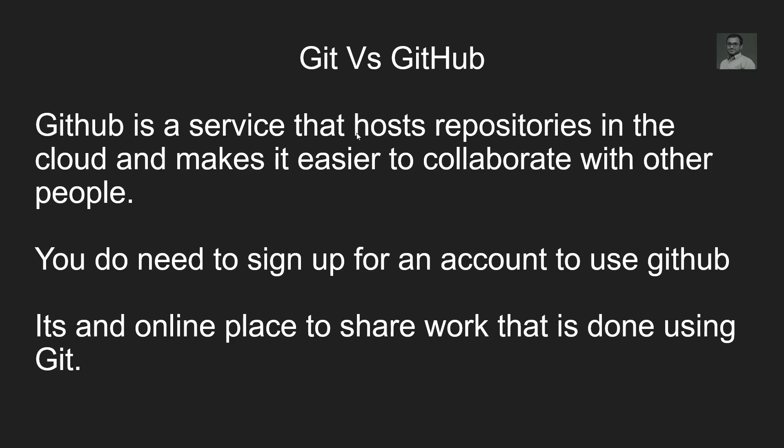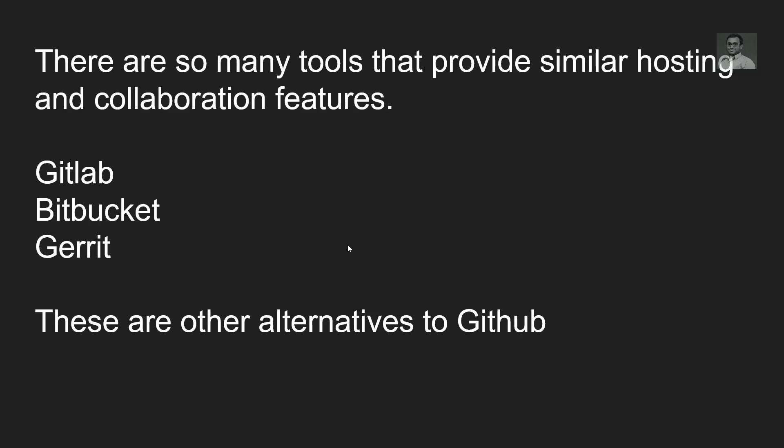GitHub, on the other hand, is a service that hosts Git repositories in the cloud. It takes your local Git repository and hosts it in the cloud, making it easier to collaborate with other people — they can work with your code from their own systems. To use GitHub you need to sign up for an account, and it's an online place to share work done using Git, so you need internet.